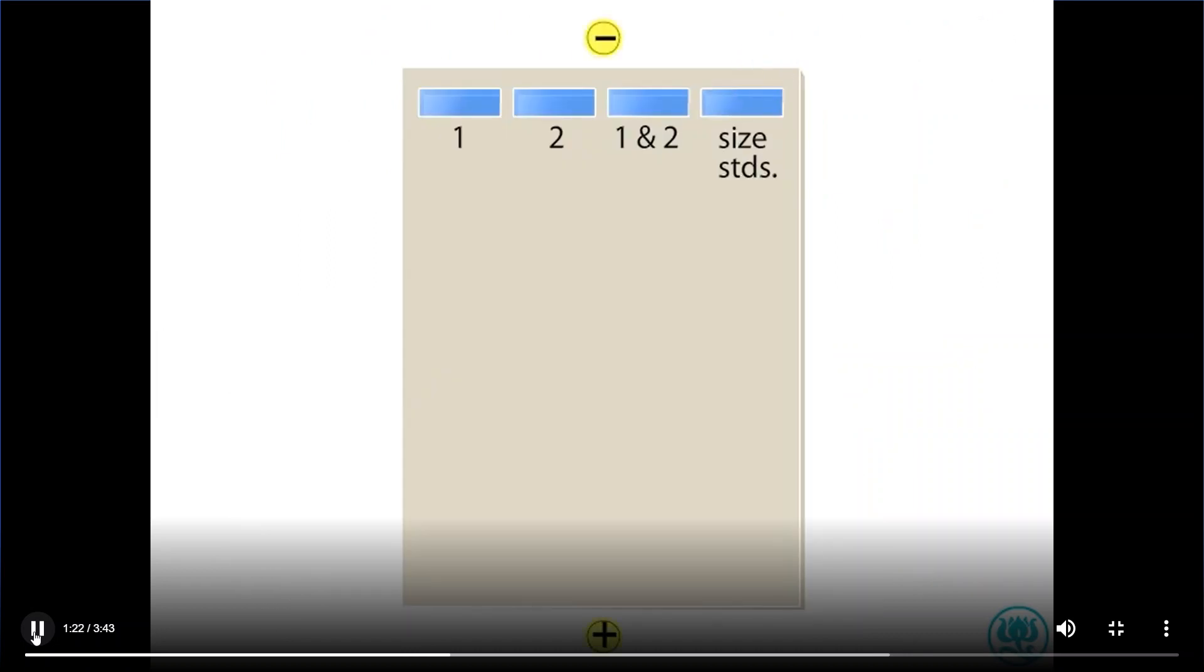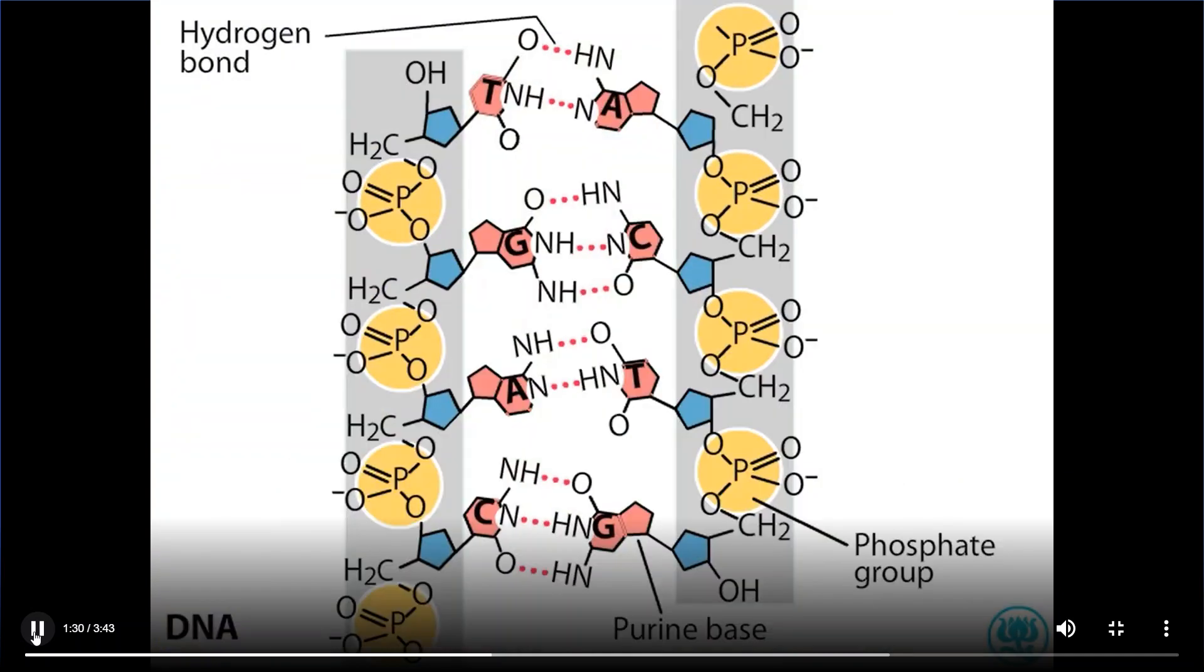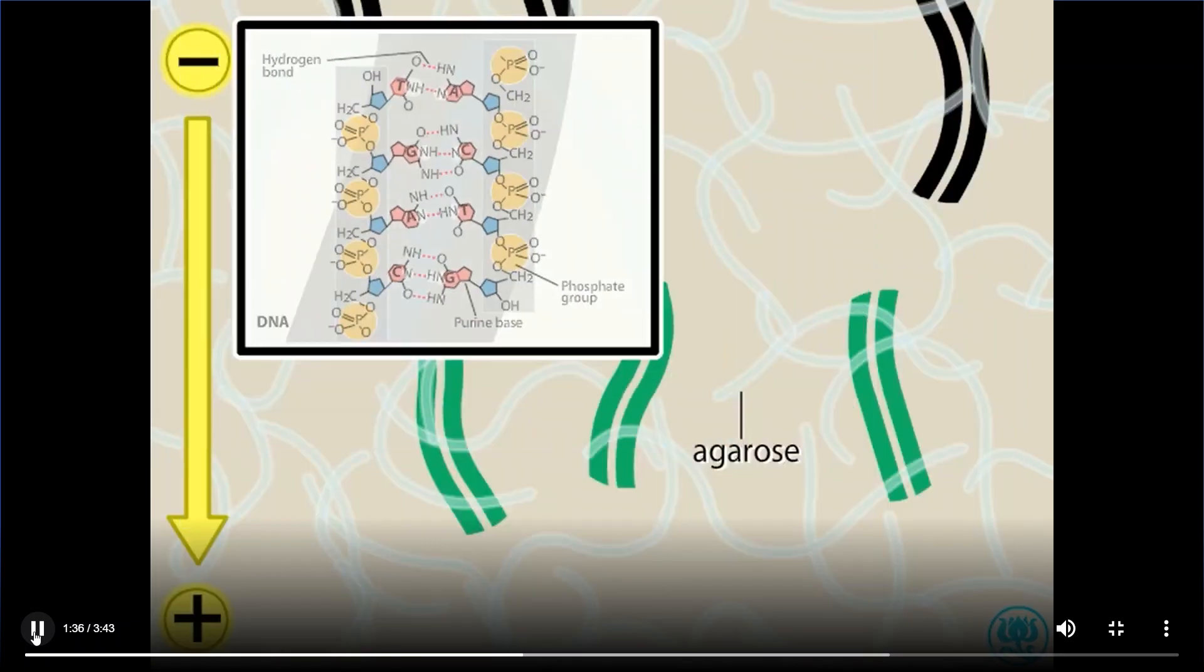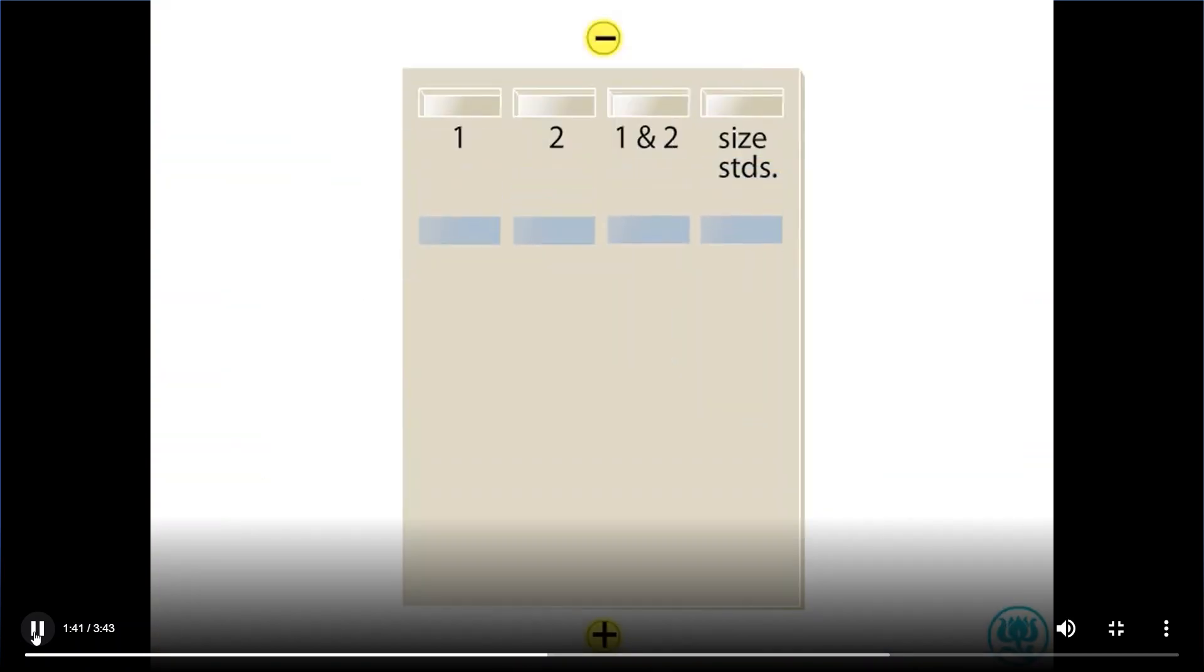The blue tracking dye is negatively charged and migrates toward the positive electrode, as does the DNA. The DNA backbones contain negatively charged phosphate groups, which are attracted to the positive electrode. The smallest fragments move the fastest, being entangled less in the agarose matrix of the gel.